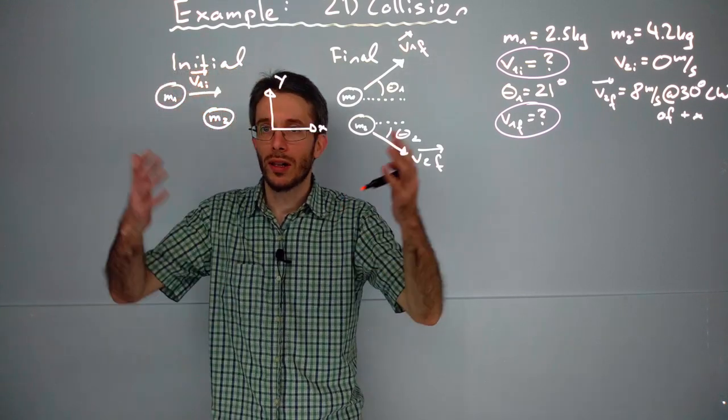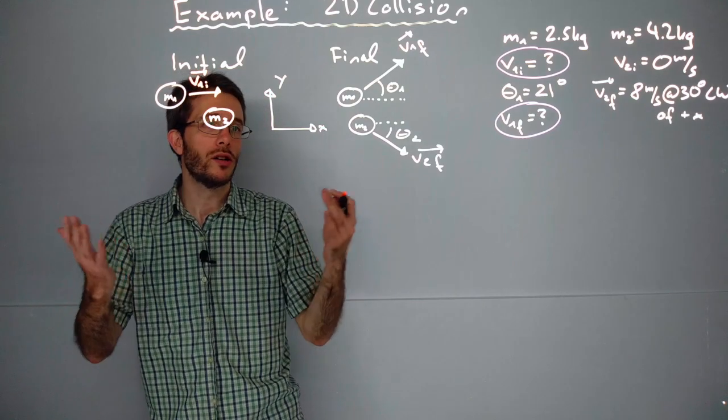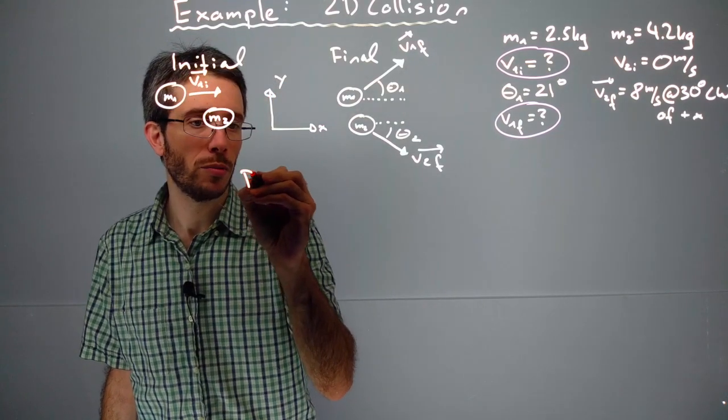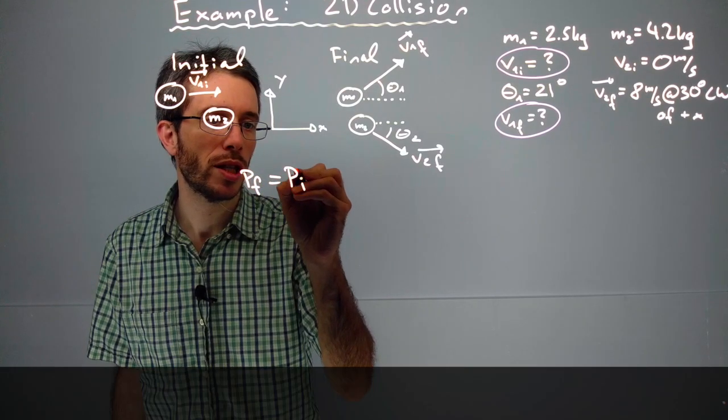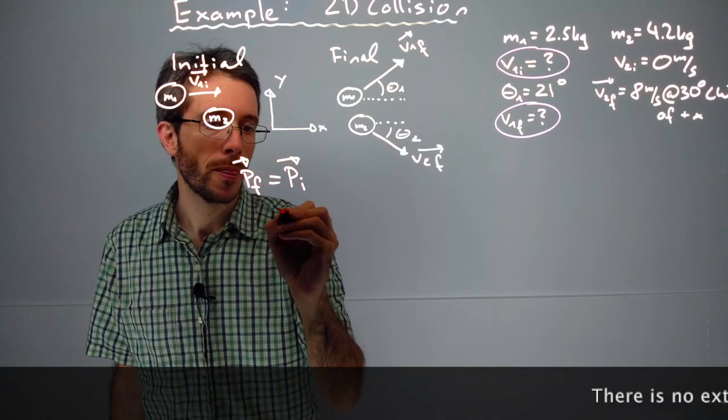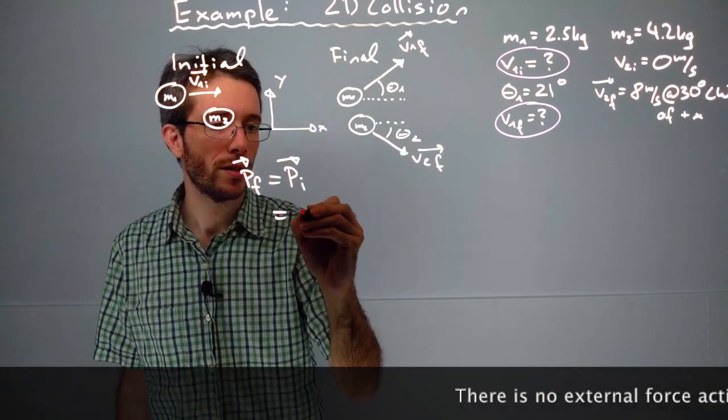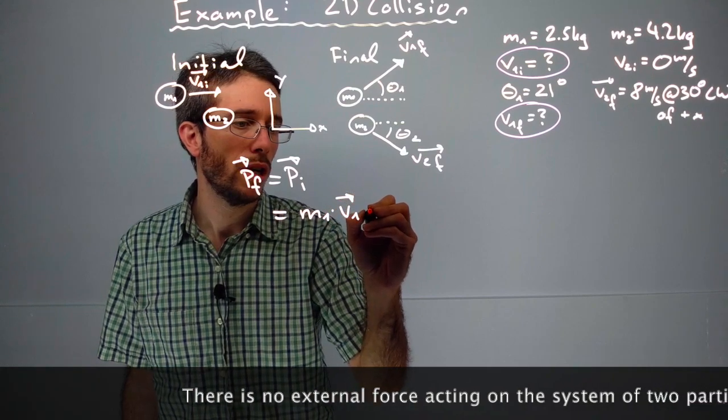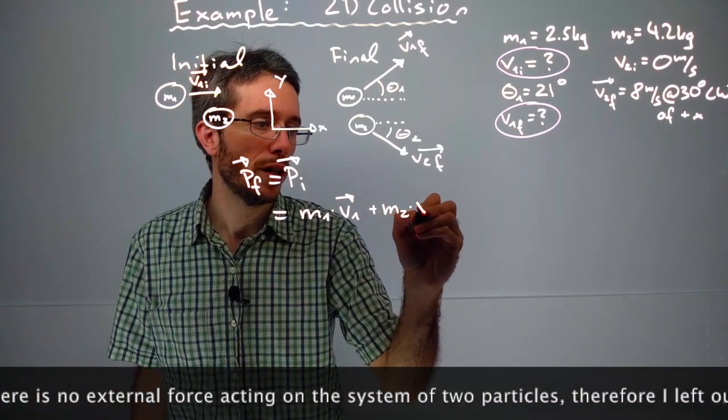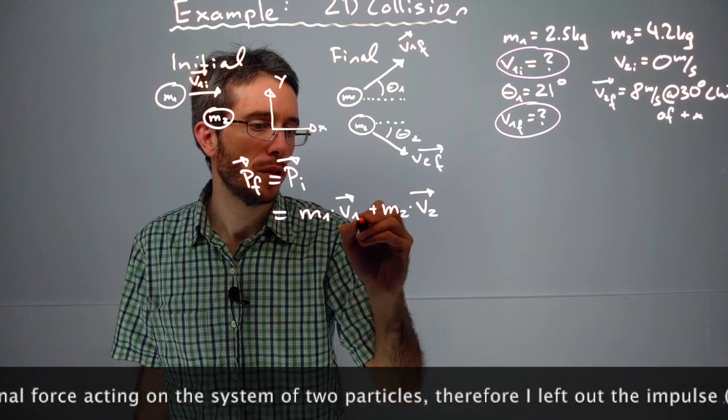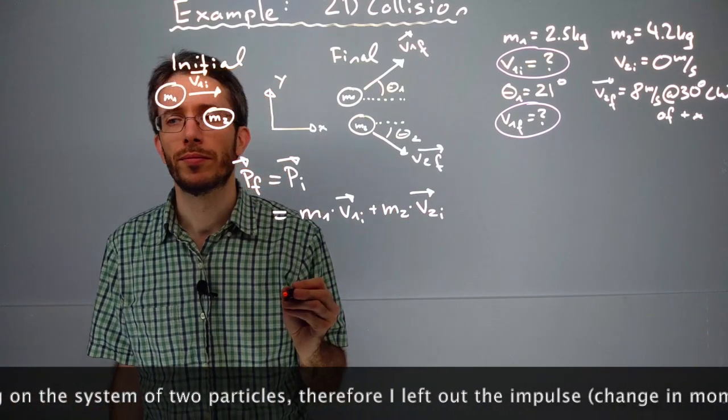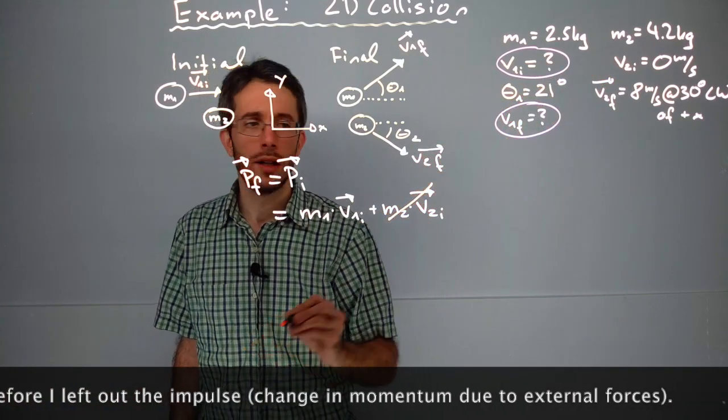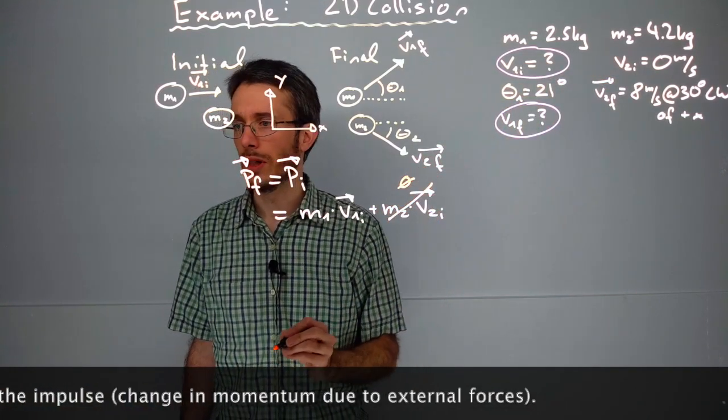So how do we solve this? We're going to apply conservation of linear momentum. The final momentum of the system equals the initial momentum of the system. Initially, I had mass 1 moving at v1 initial and mass 2 moving at v2 initial. We know that v2 is zero, so we can cross out that part.